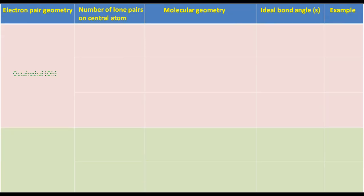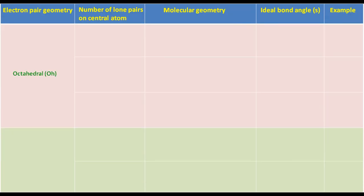For a molecule with octahedral electron pair geometry having zero lone pairs on the central atom, the molecular geometry will also be octahedral. The ideal bond angle is 90 degrees. SF6, SiF6 2-, and AsF6- are examples of this type of molecule.